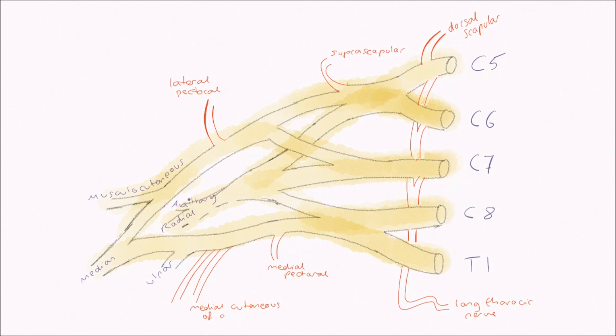Additionally, branching from the medial cord is a pair of nerves. Proximally, we have the medial cutaneous nerve of the arm, and distally, we have the medial cutaneous nerve of the forearm. These are sensory nerves only, and do what they say on the tin, innervating the skin on the medial arm and forearm respectively.